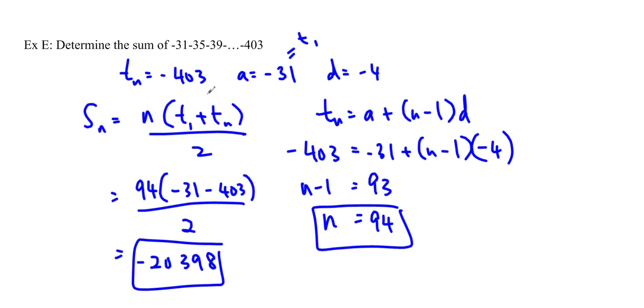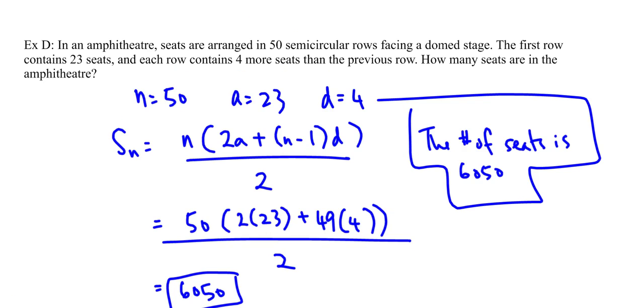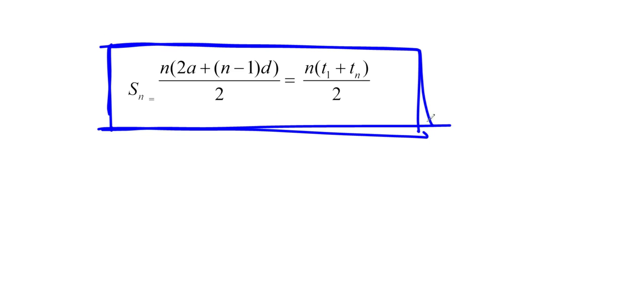So in summary, we have a couple of formulas that we found using the Gaussian method of just lining up two rows of arithmetic series and adding them together, and then dividing by 2. And we use those formulas to find the sums of different series. So I hope you enjoyed it. Thanks for watching, and I will see you soon. Bye!